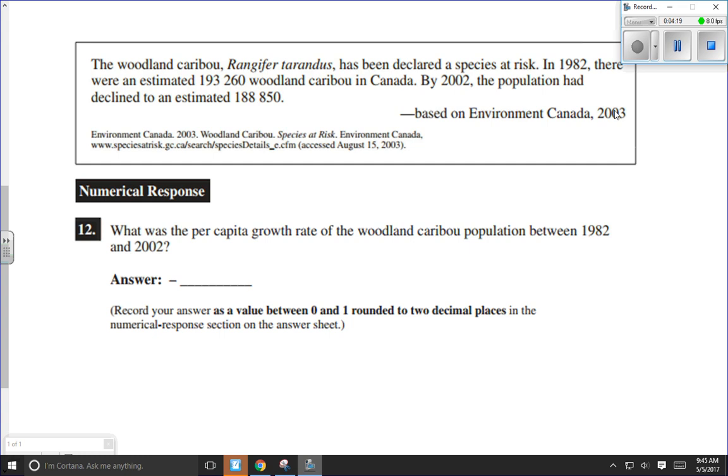Here we've got a sample question that involves caribou. The woodland caribou, Rangifer tarandus, has been declared a species at risk. In 1982, there were an estimated 193,260 woodland caribou. So that's what we're starting with. That would be our value of N, our original population size. So N is 193,260.